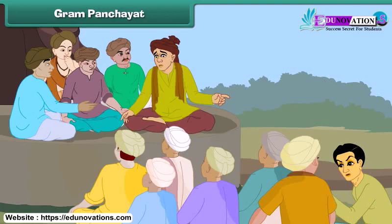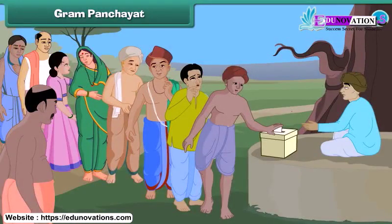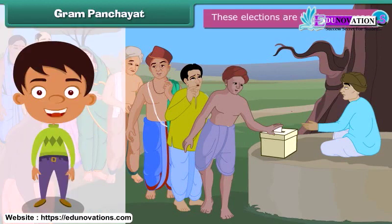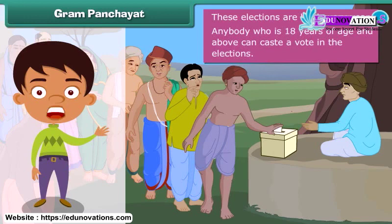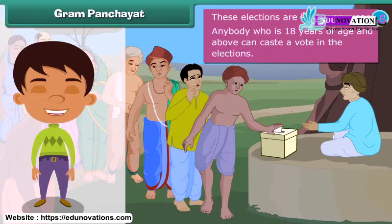A gram panchayat is the local government of a village. It is formed by members elected by the villagers in the gram panchayat elections. These elections are held every five years. Anybody who is 18 years of age and above can cast a vote in the elections.